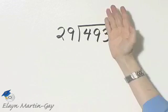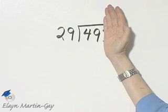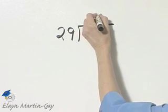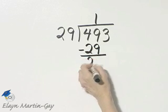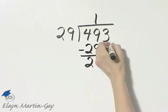Let's divide. 29 goes into 49 one time. 1 times 29 is 29. And then I subtract, remember, difference of 20.